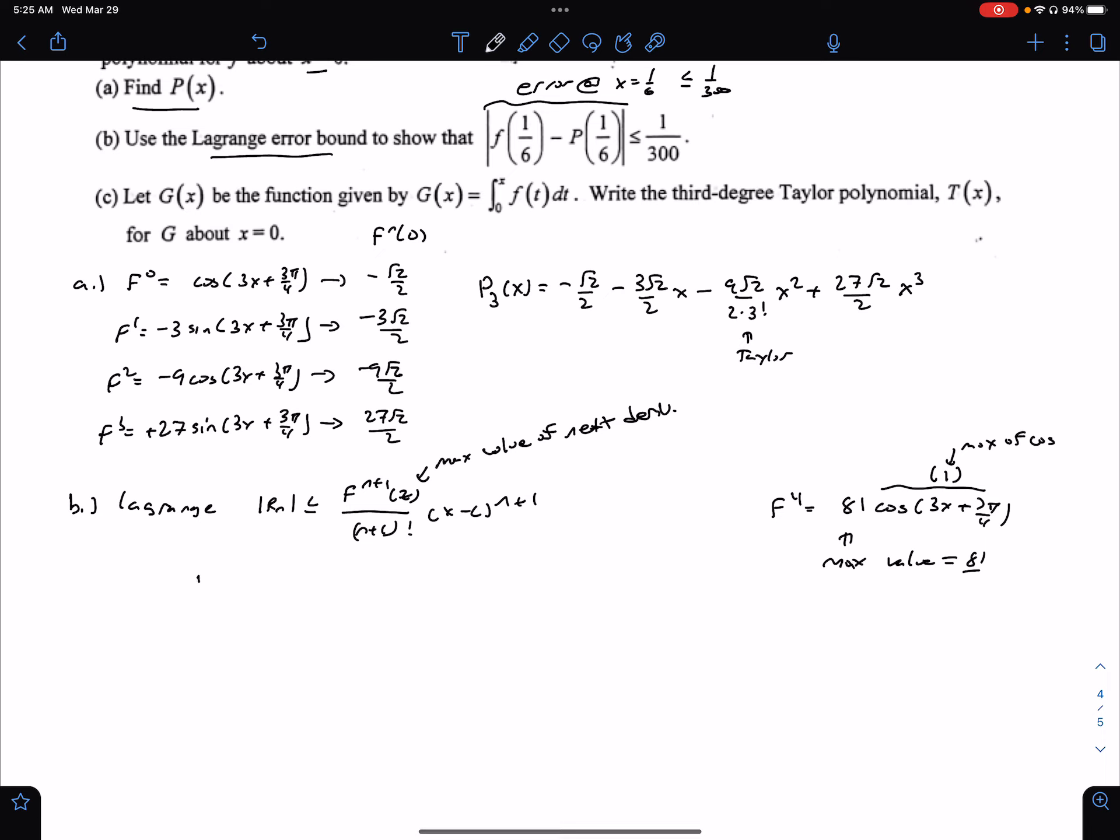So to get this one, to get the error in the third degree, we're going to take a look at the maximum value of the fourth derivative on the domain. Now we say on the domain because we really don't quite know that. We don't really know what the function looks like. So we're just picking what's the maximum it could be. And this is going to be over 4 factorial.